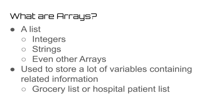An array is, as you may have guessed by now, a list. This can be a list of integers, a list of strings, and even a list of other arrays, which is something we'll talk about in a minute. Programmers use arrays when they want to store a lot of variables containing information that is all related to each other, such as a grocery list or a patient list at a hospital.